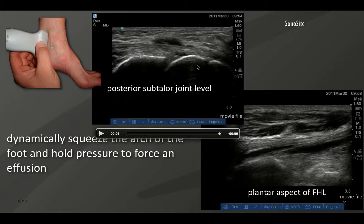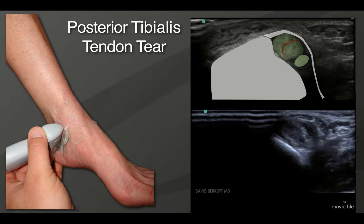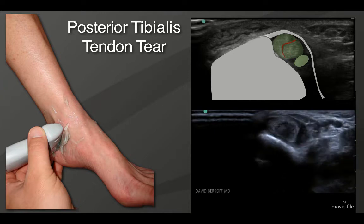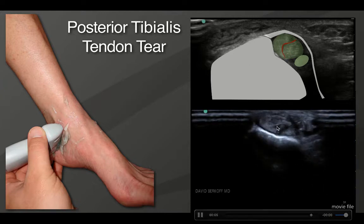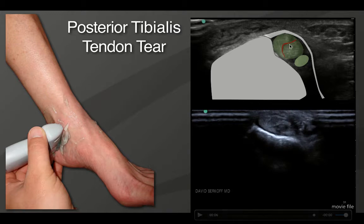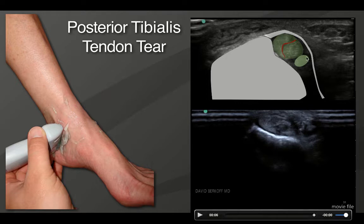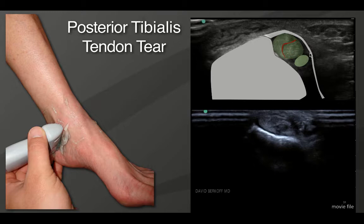Moving to the posterior tibialis tendon: tears don't occur very often, but when they do, it's easy to see the disruptions in the tendon fibers. However, these tendons can get so close together that the spaces between them start to look like a tear, so you really have to trace up and down the tendon to confirm it is in fact torn.